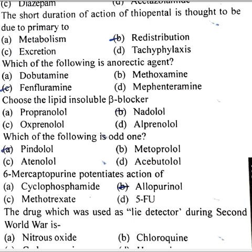Which of the following is an anorectic agent? Fenfluramine. Choose the lipid-insoluble beta-blocker: nadolol. Which of the following is the odd one? Pindolol. 6-mercaptopurine potentiates the action of allopurinol.